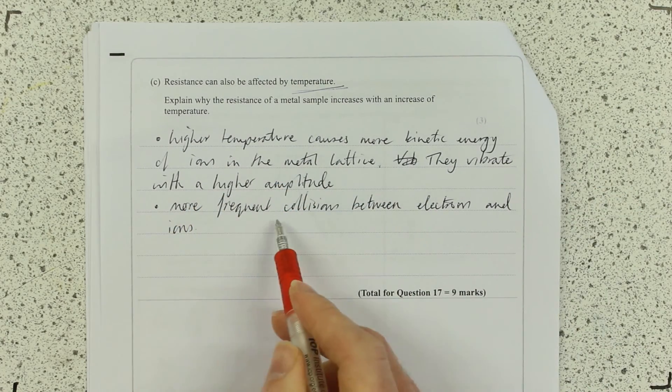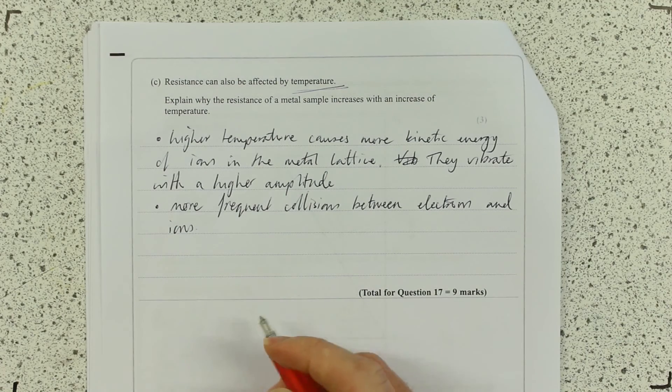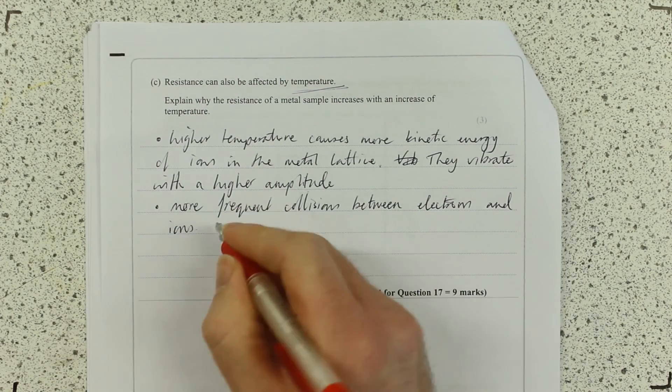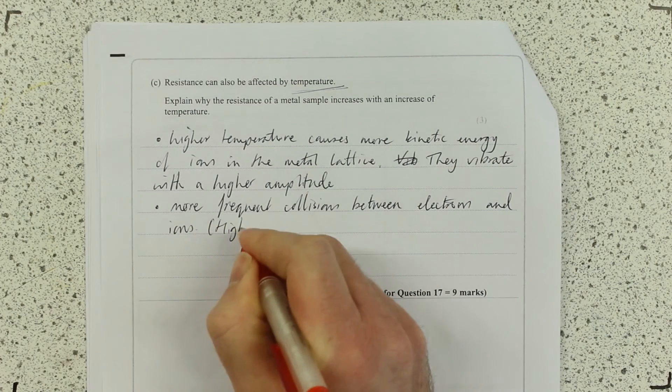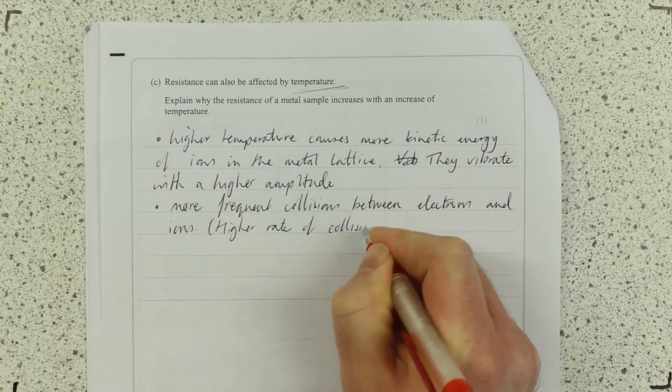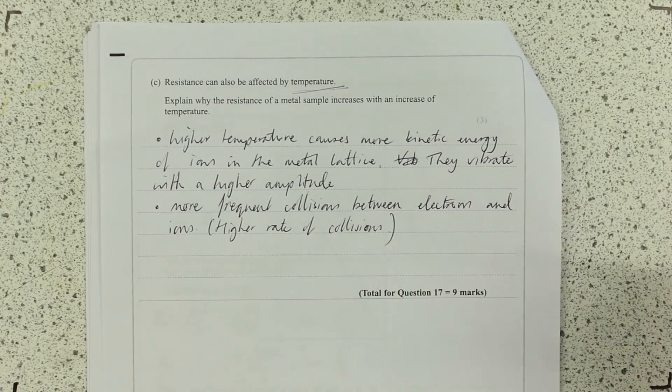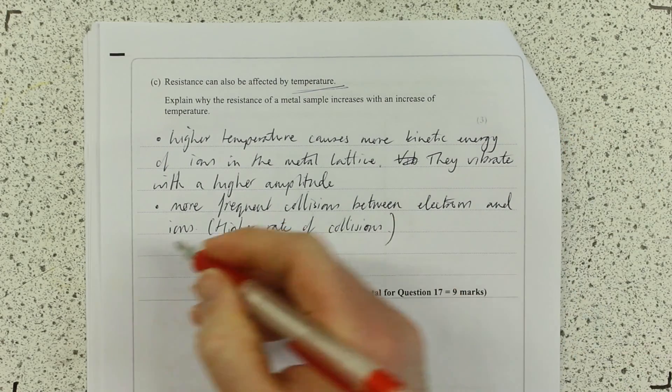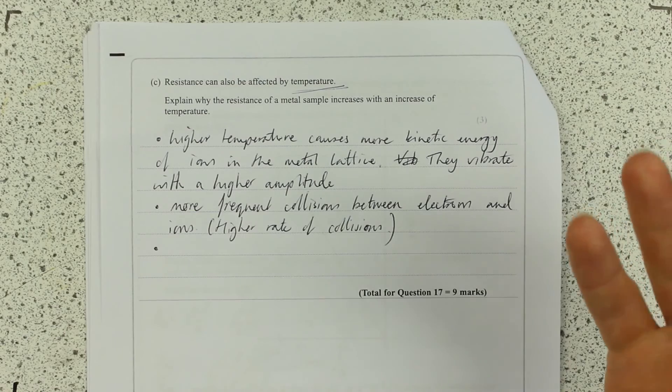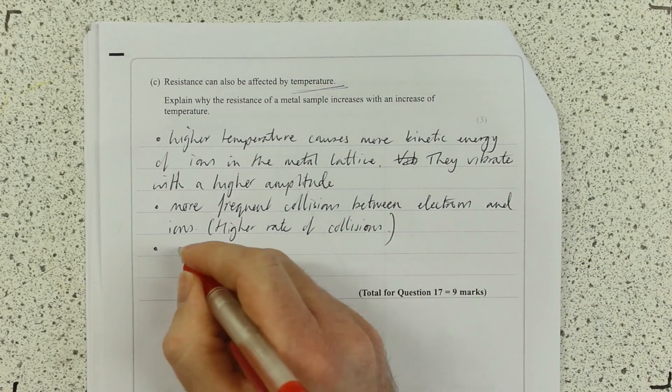Collisions between electrons and ions. And I do think you need to say more frequent or a higher rate of collisions. Because clearly, if we left it on for a million years at a low rate of collisions, we'd end up with more collisions overall. It's about the rate of collisions. It's about the rate of flow of charge. It's all divided by time.